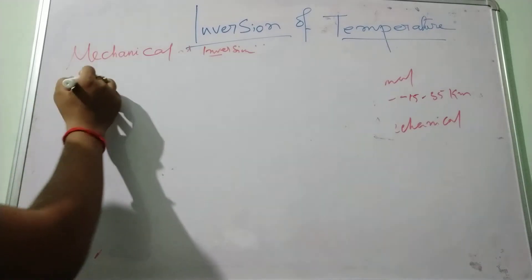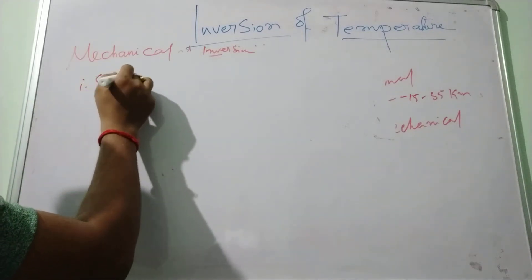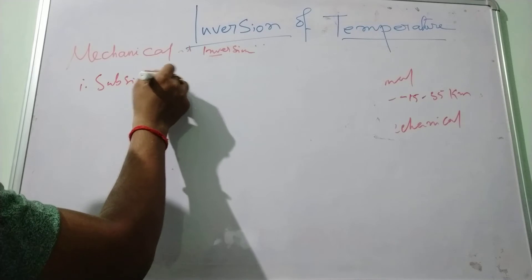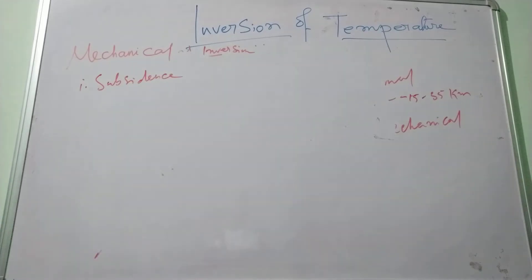Subsidence inversion is developed when a widespread layer of air descends, is compressed, and is heated by the resulting increasing atmospheric pressure.